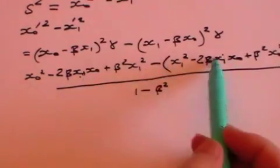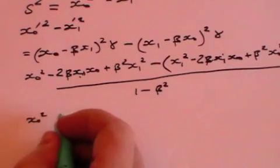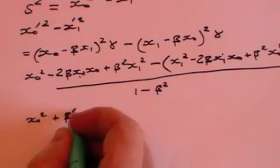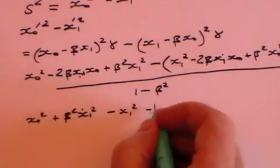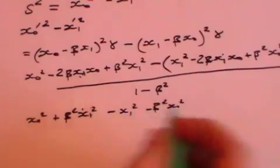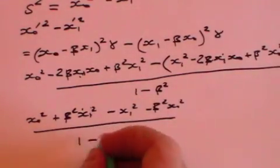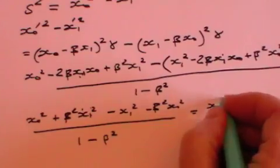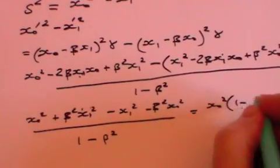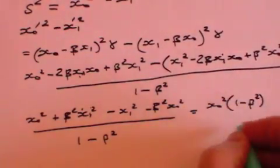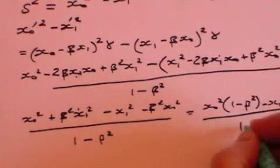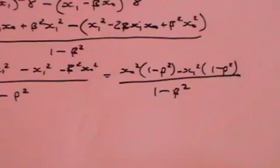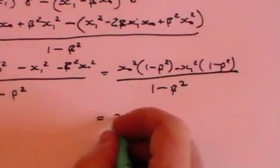And that leaves us with X0 squared plus beta squared X1 squared minus X1 squared minus beta squared X0 squared all divided by 1 minus beta squared. And that is X0 squared into 1 minus beta squared minus X1 squared into 1 minus beta squared all over 1 minus beta squared. And that equals X0 squared minus X1 squared.